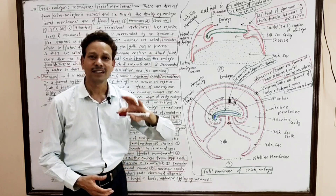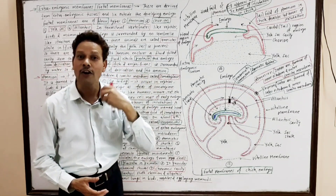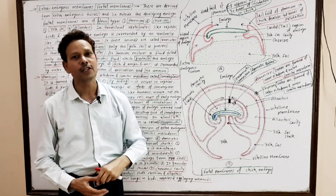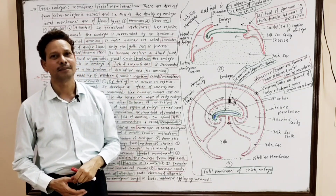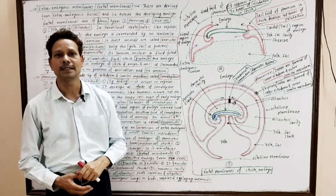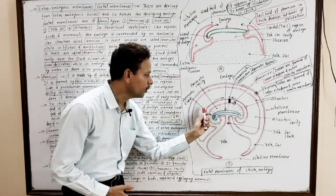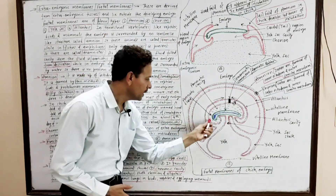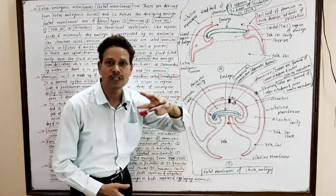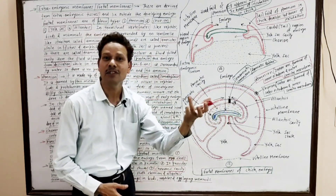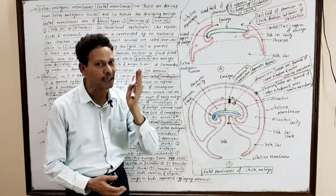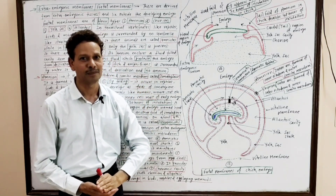As the name indicates, these are extra-embryonic coats derived from extra-embryonic tissues. These extra-embryonic fetal membranes surround the embryo from outside. In terrestrial vertebrates like reptiles, birds, and mammals, the embryo is surrounded by an inner arc or umbrella-like structure called the amnion.